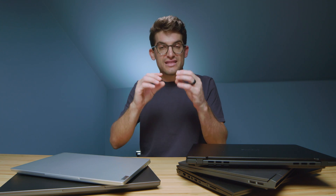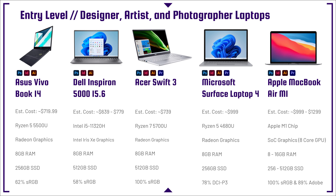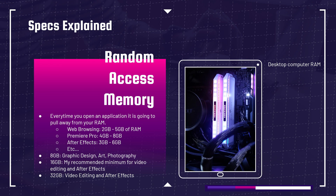If you have 8 gigs of RAM and you're trying to use Photoshop, InDesign, and Illustrator simultaneously, you'll bottleneck your computer. If you want to be working on multiple apps at the same time, each app takes away from the RAM — and at 8 gigs, an app can use anywhere from 2 to 6 gigs of RAM. So if you open one program, you've basically almost maxed out your RAM at 8 gigs. That's why I think 16 is a great sweet spot for a design, artist, or photographer laptop.